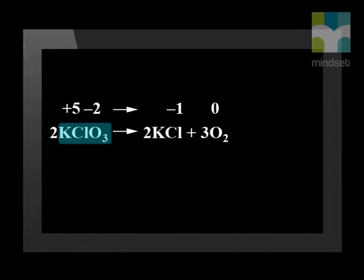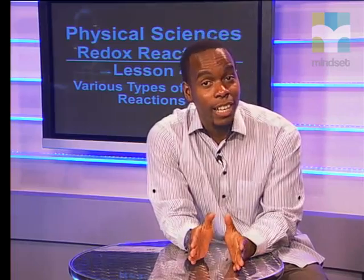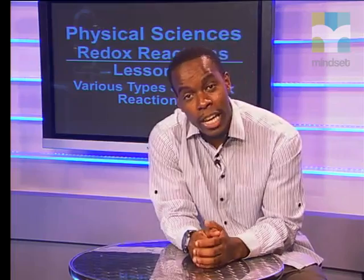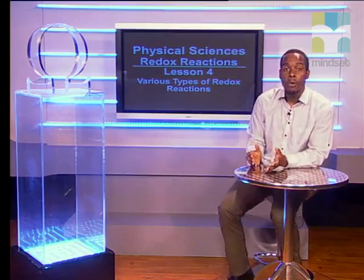In the chlorate molecule, Cl has an oxidation number of +5, and in the chloride molecule, Cl has an oxidation number of -1. Oxygen changes from -2 to 0. There is a definite change in oxidation numbers and therefore this is a redox reaction. It is also a decomposition reaction, since the compound potassium chlorate has broken down into two substances.